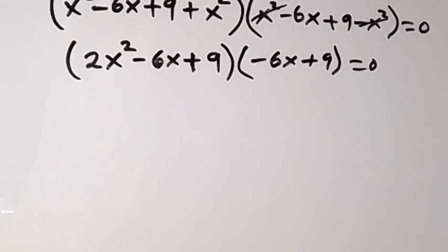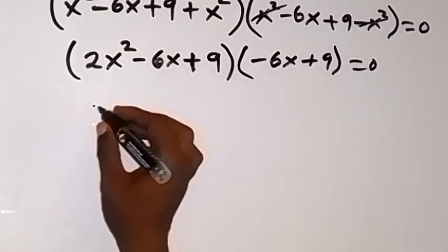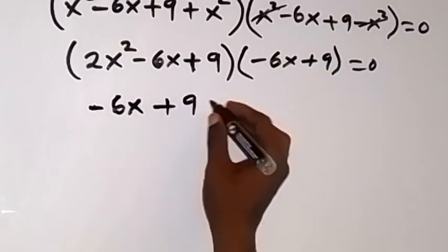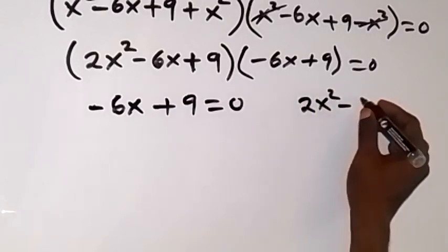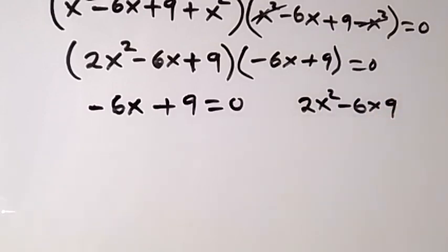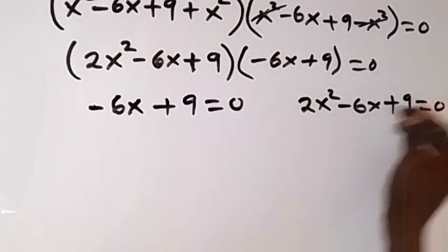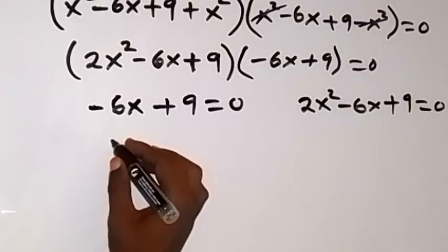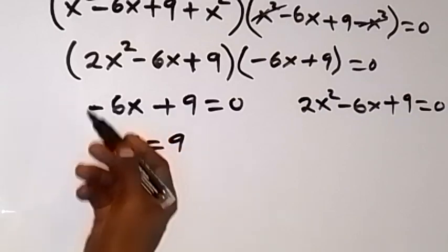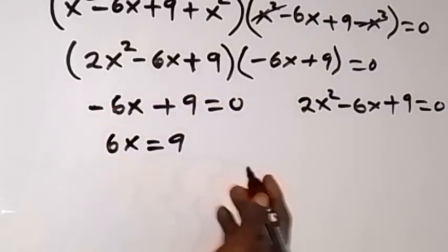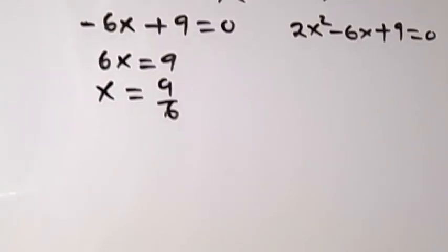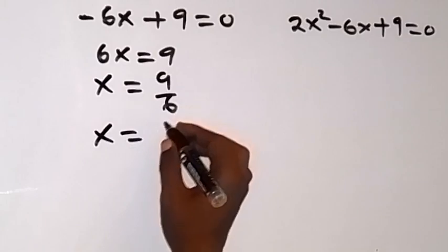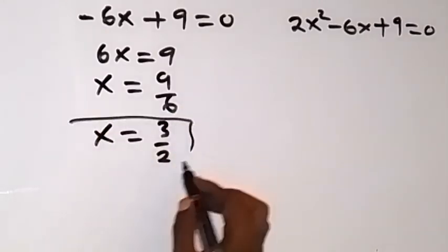Either factor has to be 0 for the product to equal 0. Let's first equate the simpler one: minus 6x plus 9 equals 0. Solving this gives 6x equals 9, so x equals 9 over 6, which simplifies to 3 over 2. That is the solution from this factor.